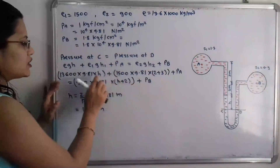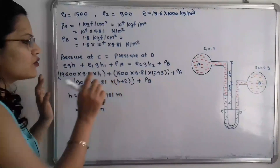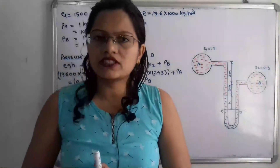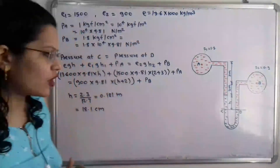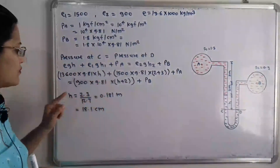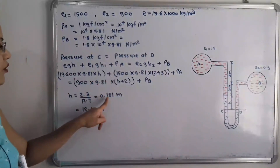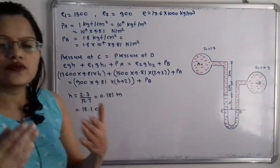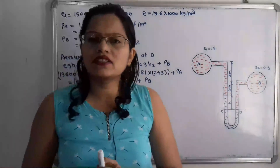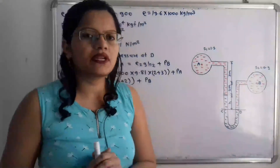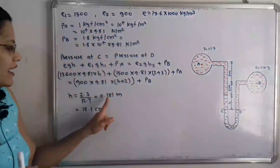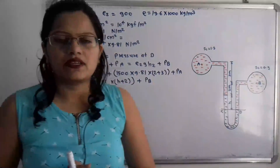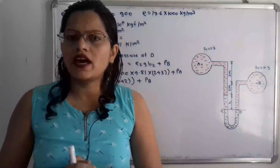In this equation there is only one unknown term, H. Solving for H, we get H = 0.181 meters, which can be converted to 18.1 centimeters. This is the answer — the difference in mercury level in the differential manometer.